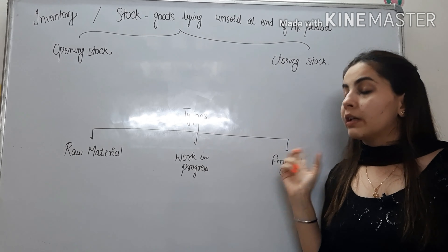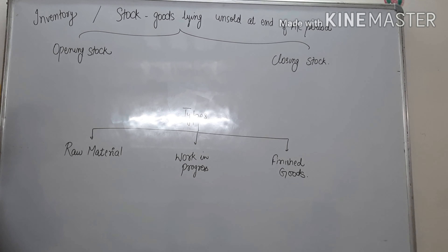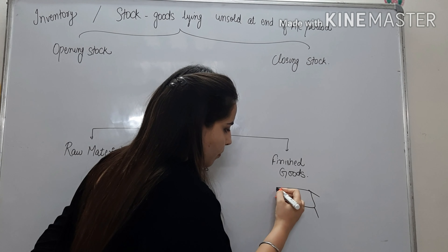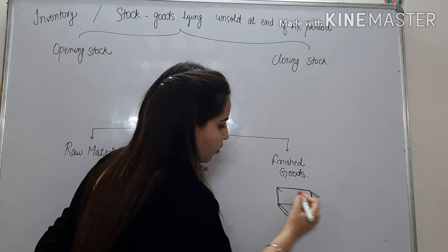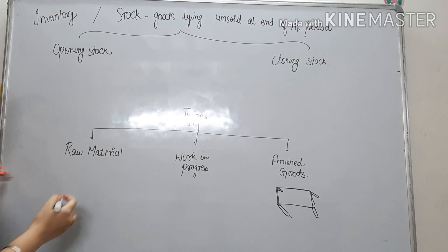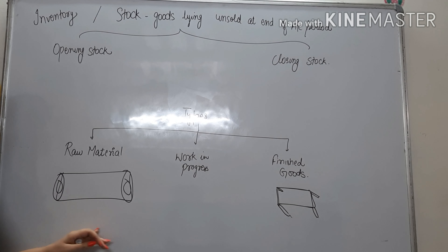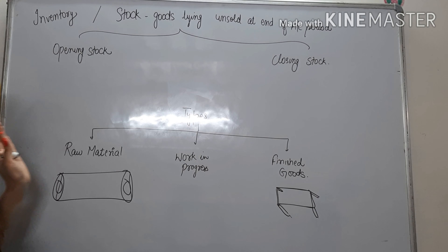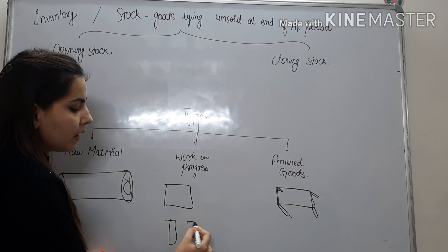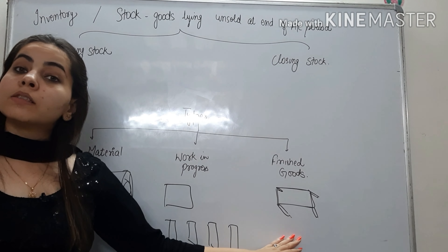Phir aapke paas aata hai types of stock. Is concept ko mein hamesha ek hi example dekar explain karti hun — wo hai wood ki example, furniture making ki example. Toh agar aapko ek table ready karna hai, iske chaar legs hongi, thoda glass hoga upar, aur ye achhe se aap bana doge, isko finishing look de doge, polish kar doge. Isko banane ke liye you will require wood. Aapko ek wood ka piece chahiye. Toh wood is your raw material — jo aap kisi se buy karoge. Uske baad jab aapke shop pe aayega, aap usko wood ko cutting karoge. Abhi table bana ya, chaar legs bhi bana li, par abhi inko jodna baqi hai. Jab abhi isko jodoge, then it will become ready.